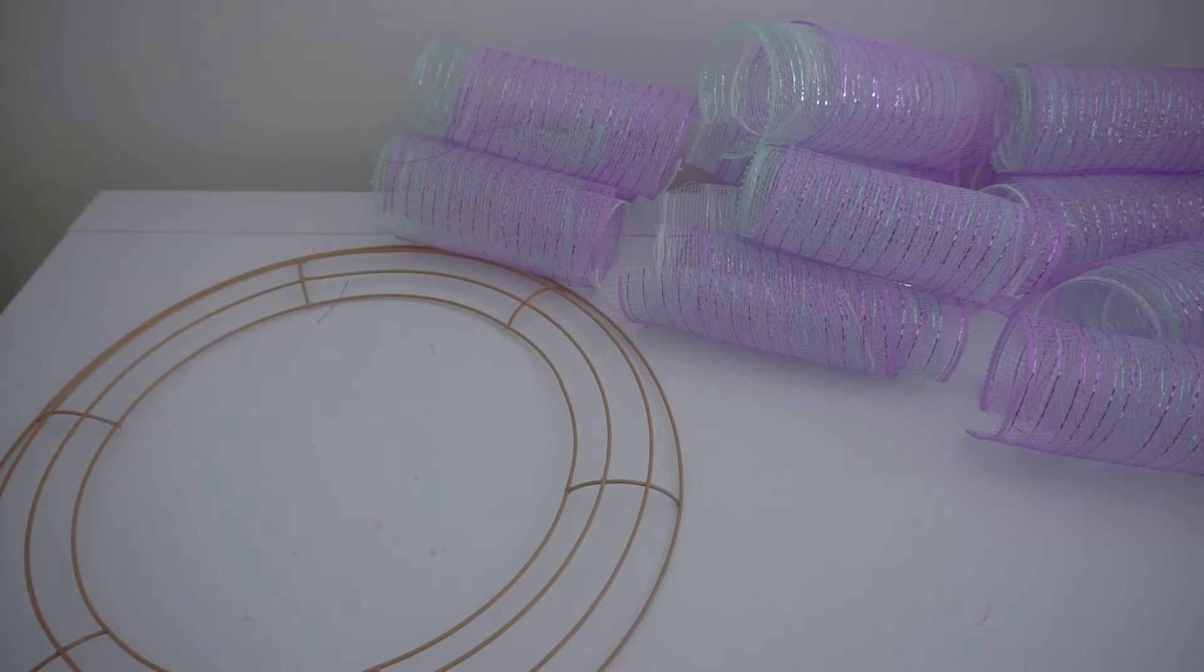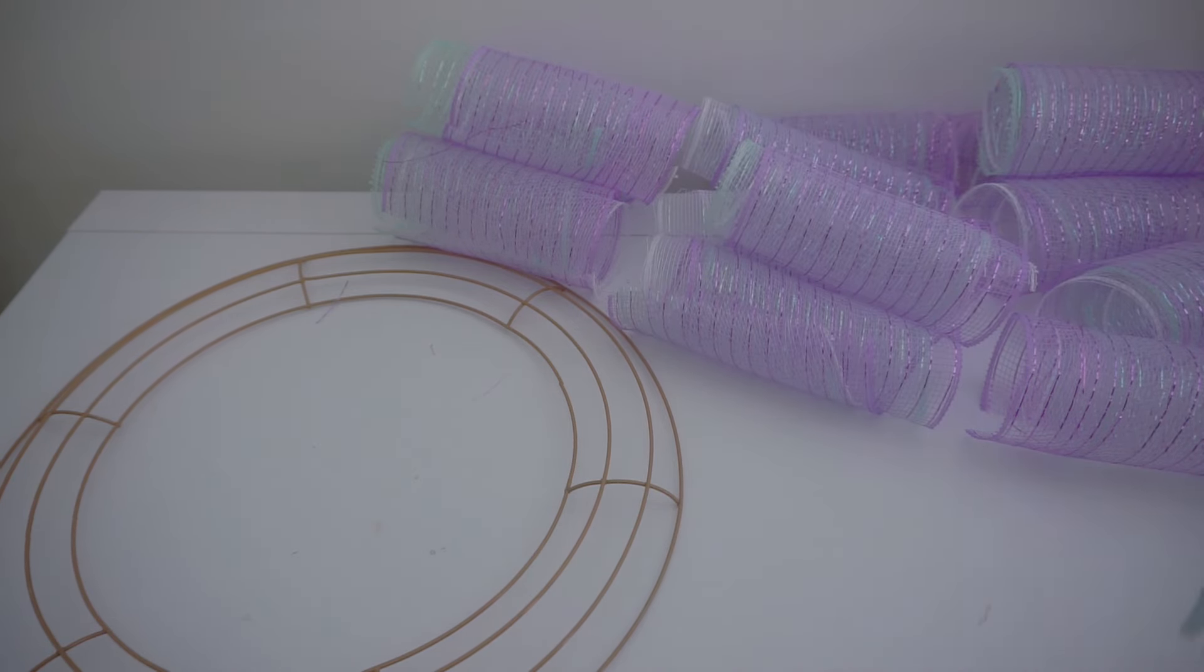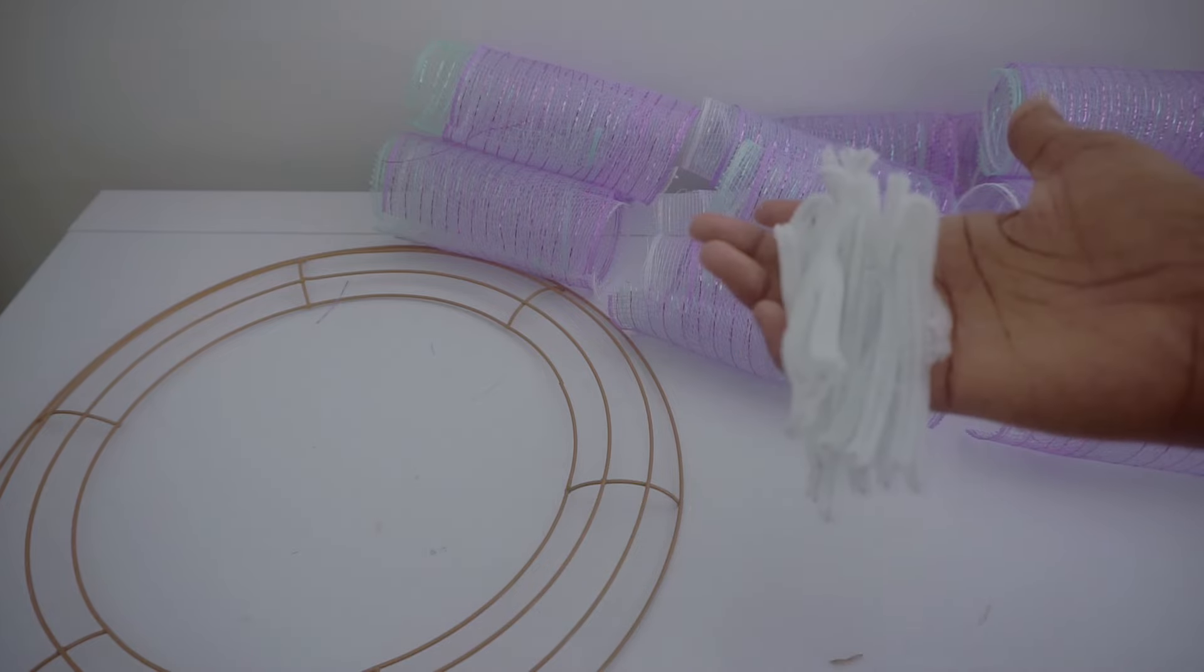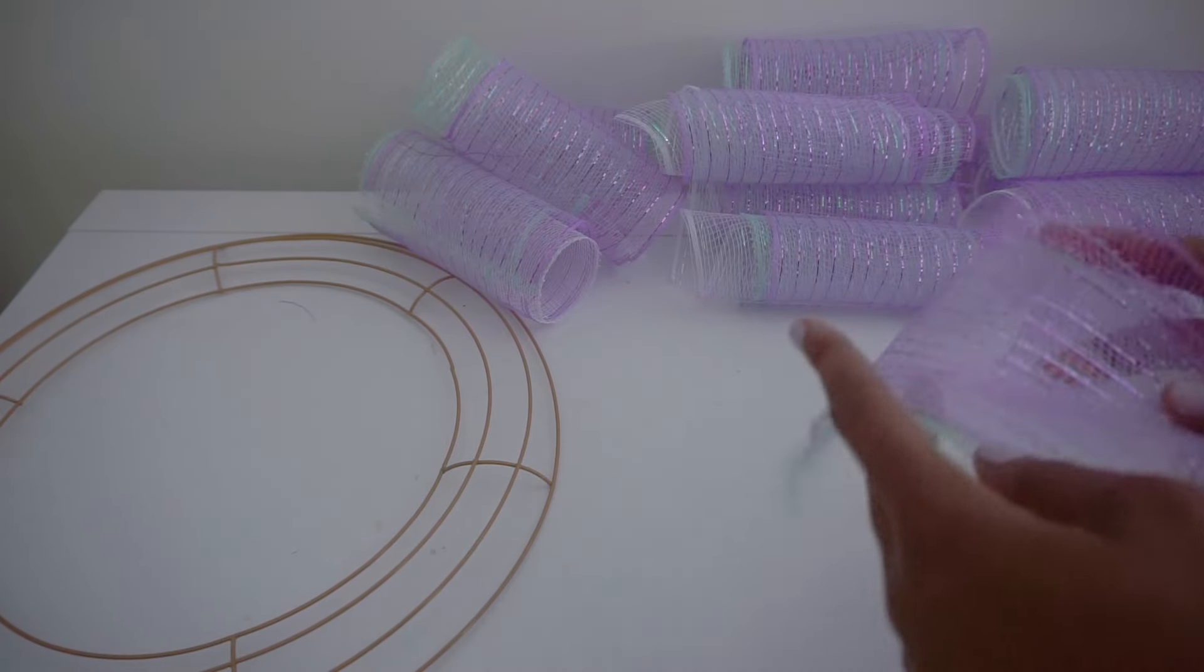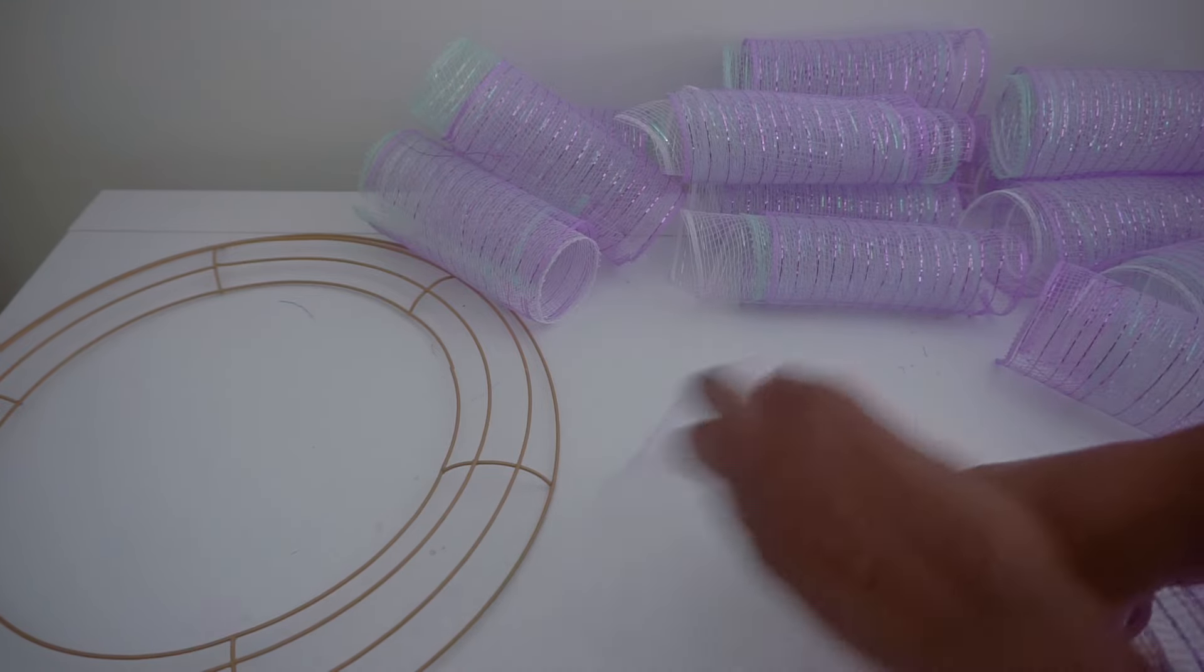Alright, so I've cut all of my mesh into 8 inch long pieces and I've cut my stems into thirds. So what I'm going to do is just scrunch my mesh and I prefer to kind of alternate layering them just like so.